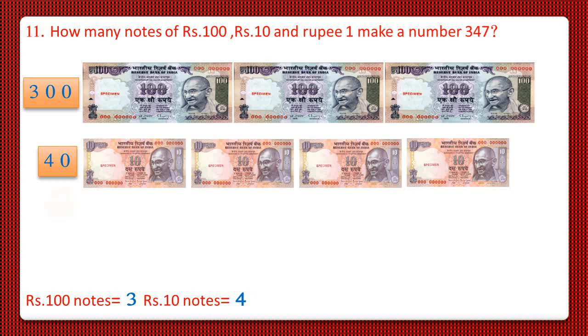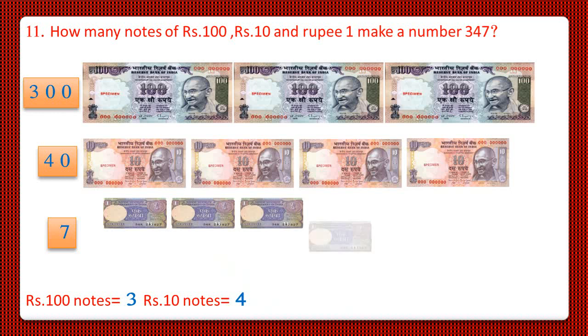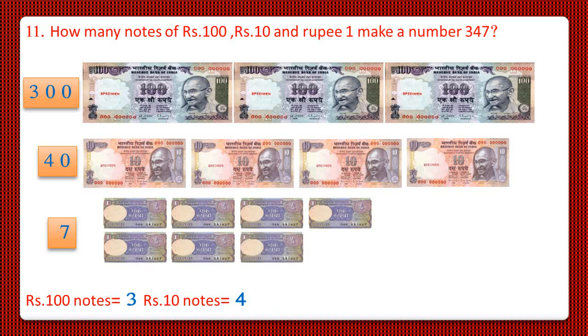And for Rs. 1 notes, let us count. It is Rs. 1, 2, 3, 4, 5, 6 and Rs. 7. So 7 one rupee notes makes Rs. 7.